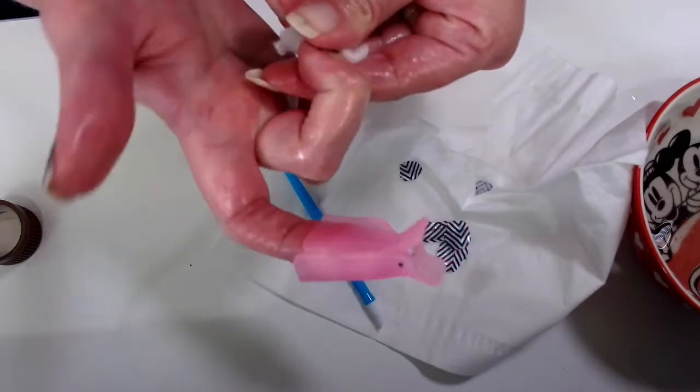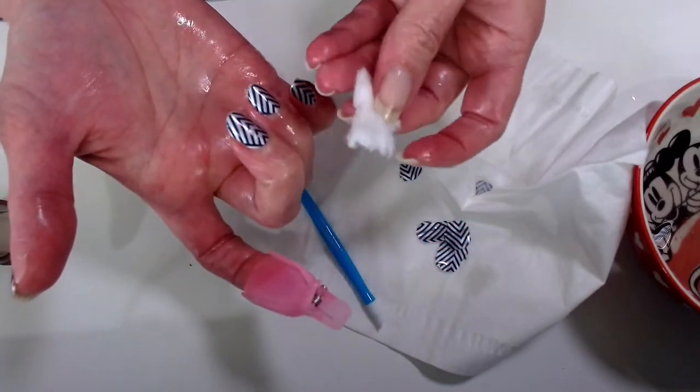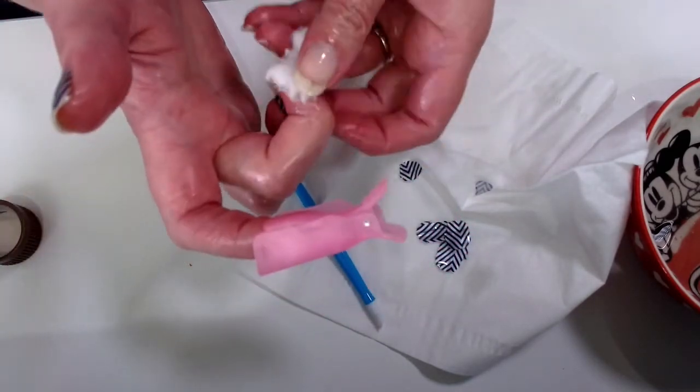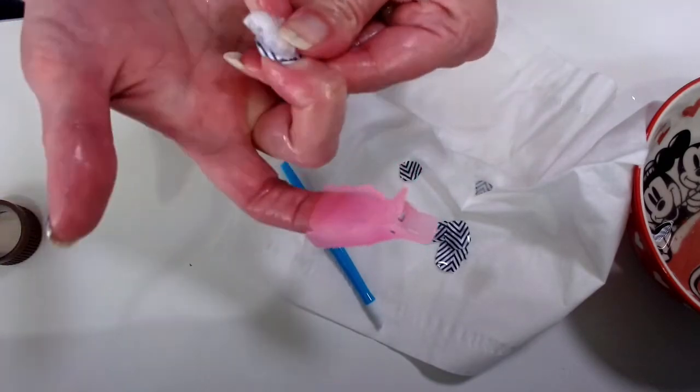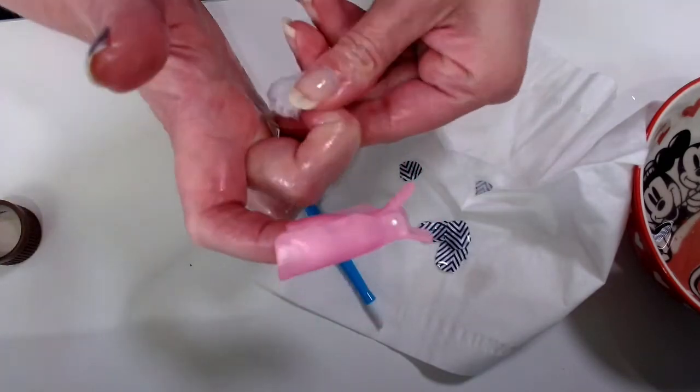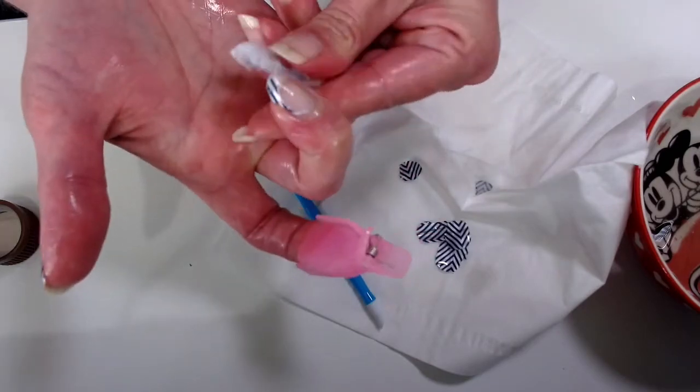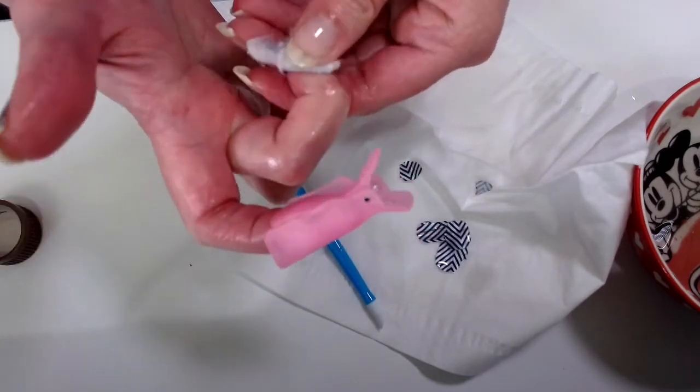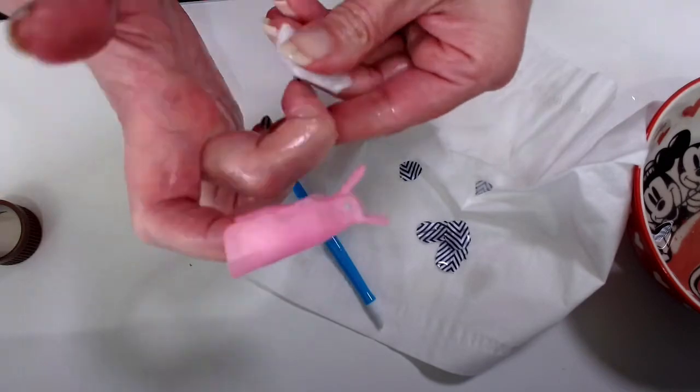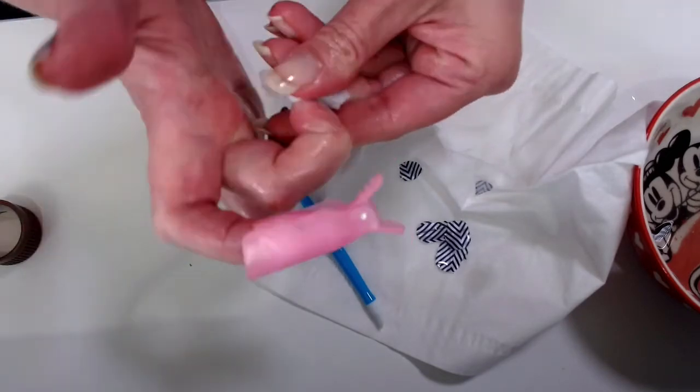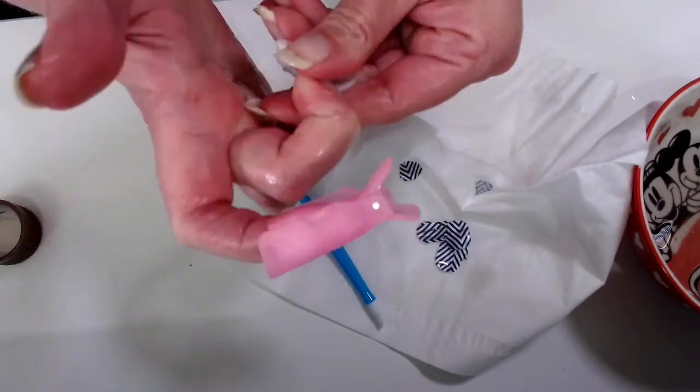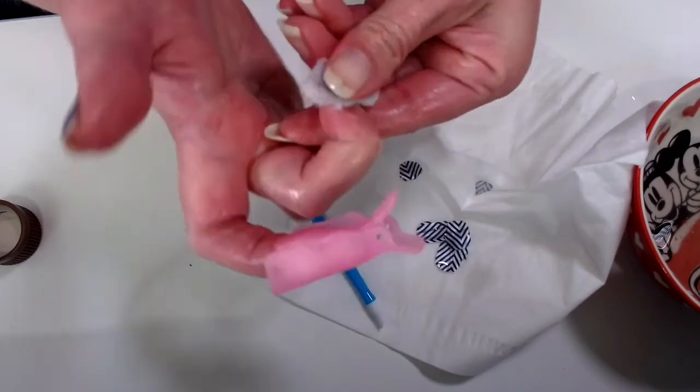The other method would just be to get some nail polish remover on a cotton ball and just literally rub it on that nail polish wrap and it just dissolves. So that's the other method and you could certainly do that especially if you're in a hurry and you just need to get them off.